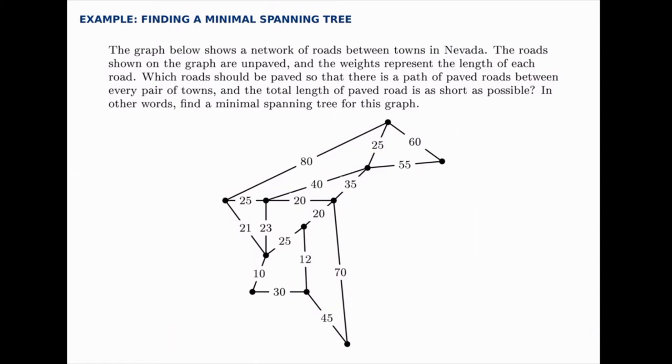In this example we're going to find a minimal spanning tree. This graph shows a network of roads between some towns in Nevada. The roads shown on the graph are unpaved and the weights represent the length of each road.